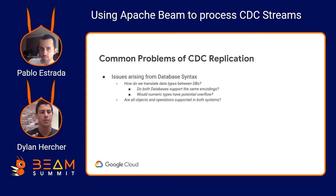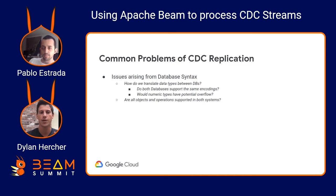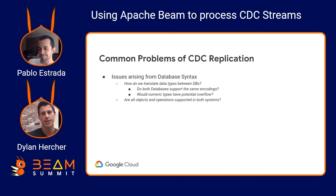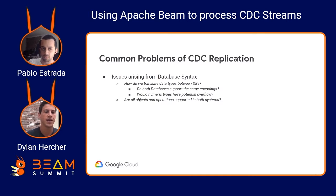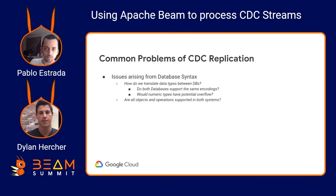There are a number of common problems around CDC replication. The first one is around database syntax: how do we translate different data types from a source database into a target? How do we translate the data from source to target if there isn't a perfect alignment? Does the database support one-to-one column type mapping? And is there potential numeric overflow or an issue with different encodings between the two systems?